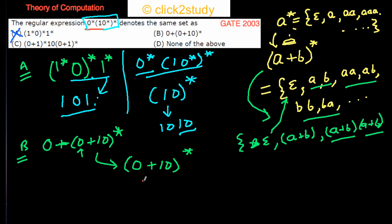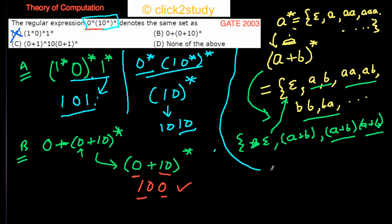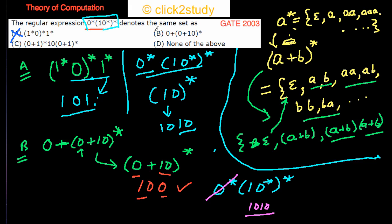Consider the string 10. Option B can generate it: use 1 from (0+1) and concatenate with 0 from 0-star. But the given expression 0-star(10-star)-star cannot generate 10, because to start with 1 you drop the leading 0-star, and then including the group forces an extra 0. So option B is also eliminated.